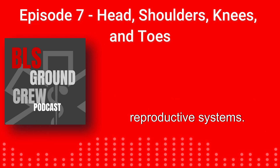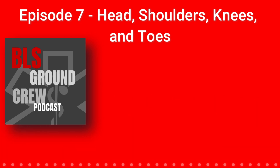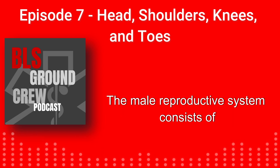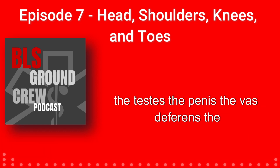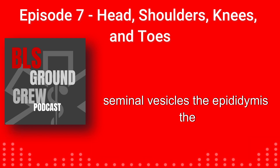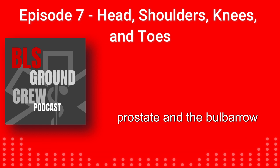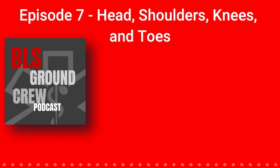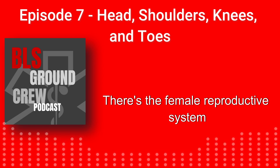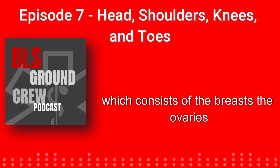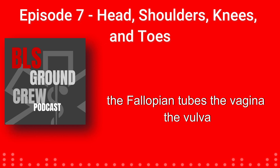There are two reproductive systems. The male reproductive system consists of the testes, the penis, the vas deferens, the seminal vesicles, the epididymis, the prostate, and the bulbourethral gland. The female reproductive system consists of the breasts, the ovaries, the fallopian tubes, the vagina, the vulva, and the uterus.